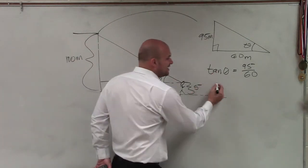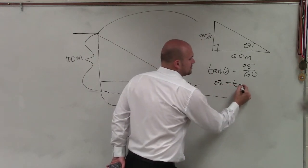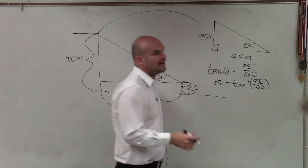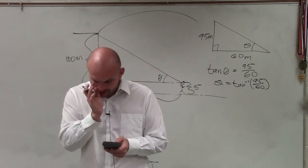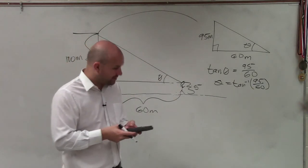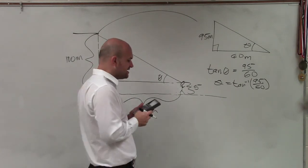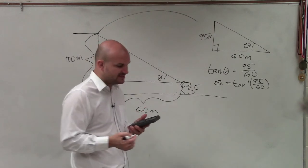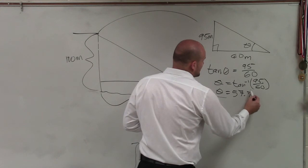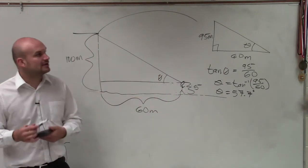So to find theta, we actually can't use tangent. We need to use the tangent inverse. So I need to go to my calculator, make sure I'm in degree mode, and I'm going to hit second tangent, which will give us tangent inverse, and I'm going to do 95 divided by 60. And that's going to be - I said round to the nearest tenth - so it would be 57.7. So theta equals 57.7 degrees.